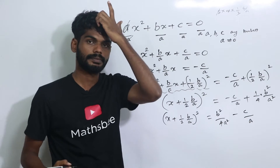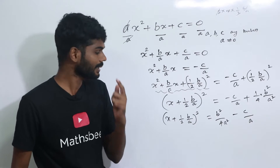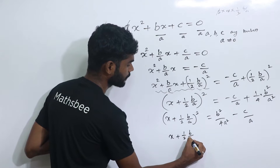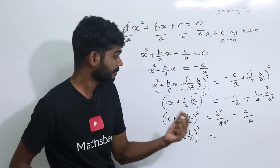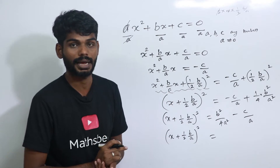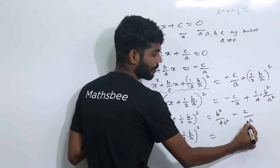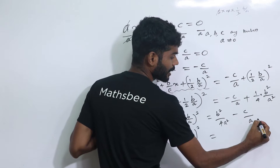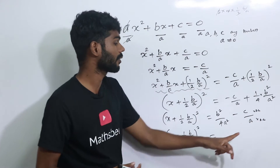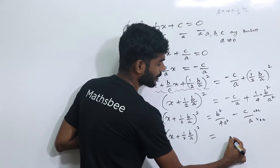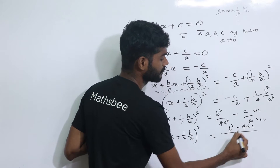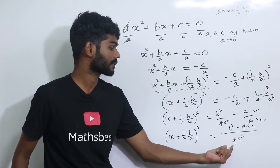We take the LCM on the right hand side. The denominators are 4a squared and a. Taking LCM as 4a squared, the numerator becomes b squared minus 4ac. So x plus half into b by a, all squared, equals b squared minus 4ac by 4a squared.